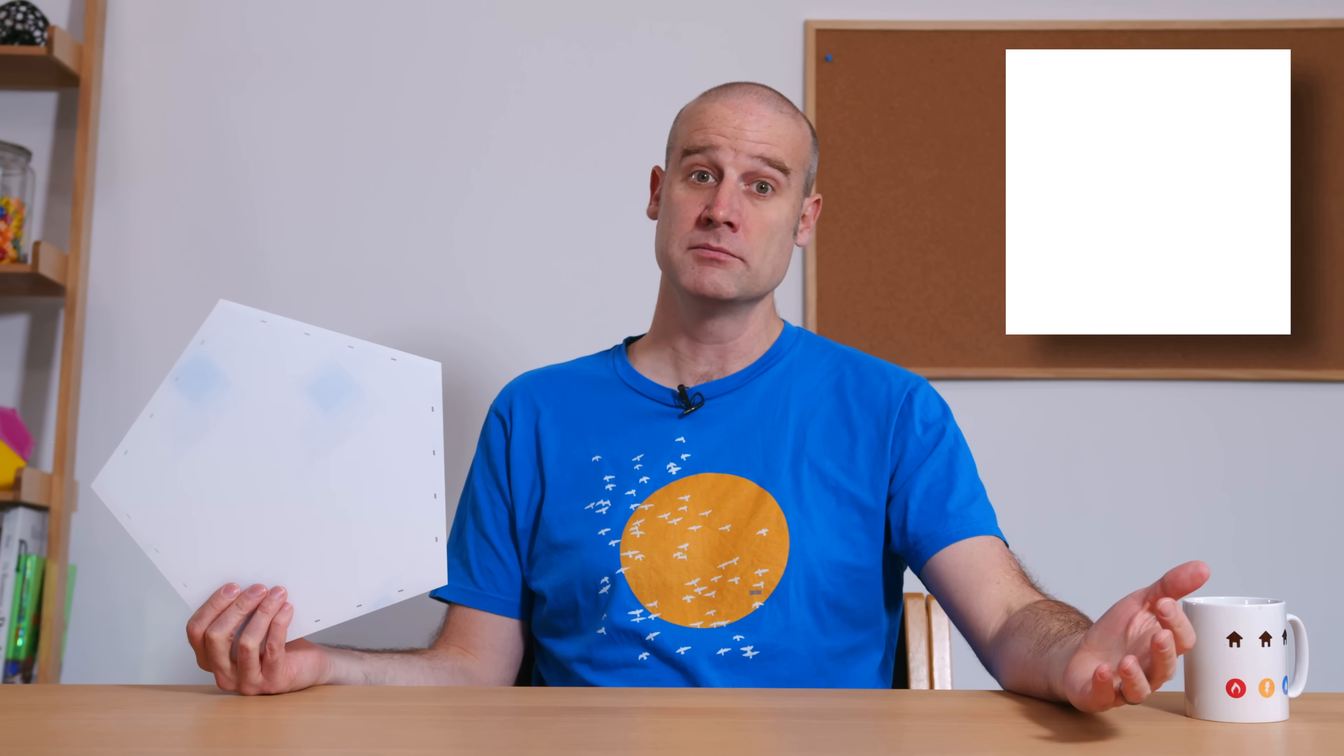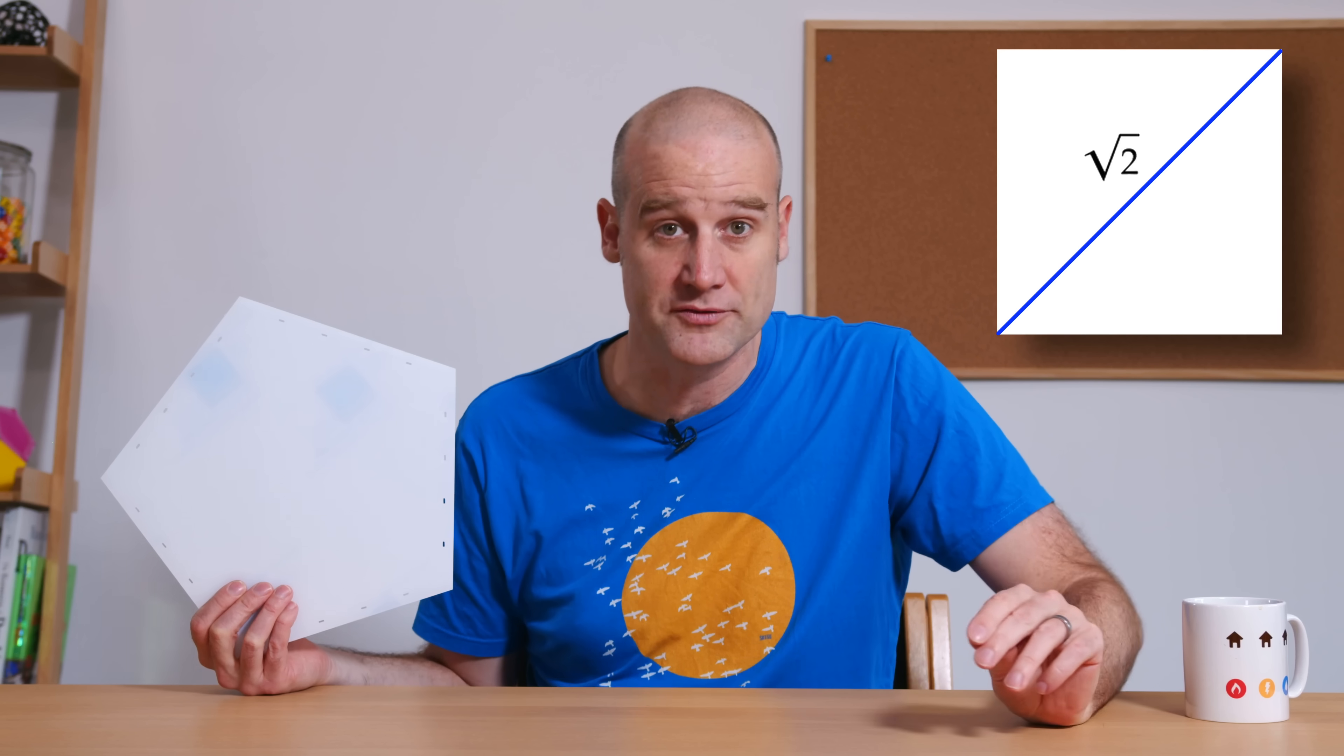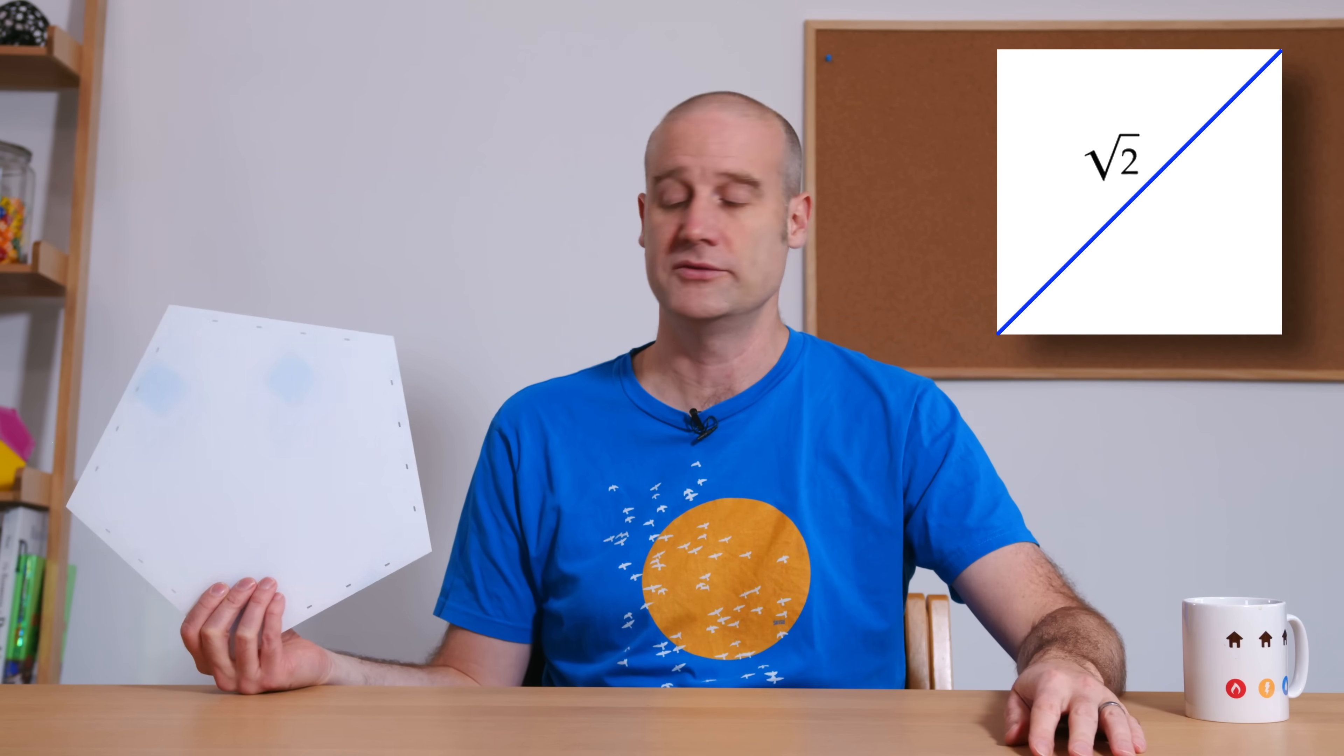Don't get me wrong, I love other shapes that do similar things. A square is pretty exciting. It's got a diagonal equal to the square root of 2, another wonderful constant.